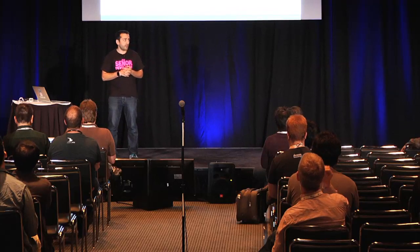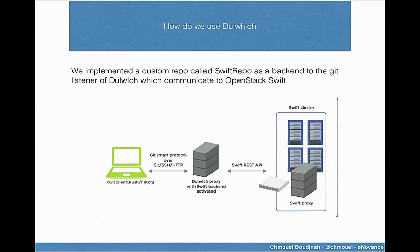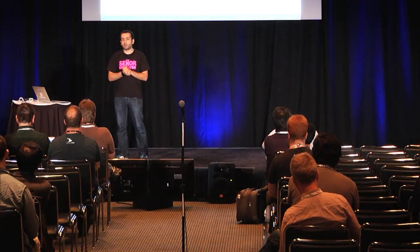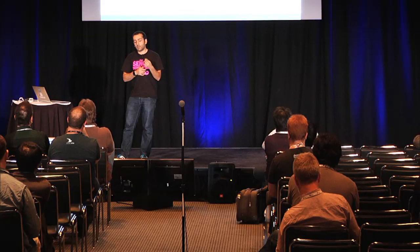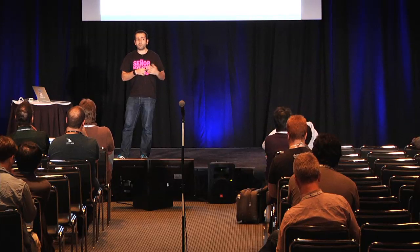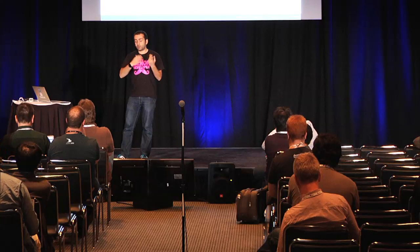In an environment like this, you end up with a Dulwich proxy that sits between the Swift cluster and the Git client. You do your git-push or git-fetch to that URL, and the Dulwich proxy takes care of uploading to the Swift cluster and handling the create, delete, and all the blob operations. It's pretty transparent — we didn't need a custom middleware inside Swift, we didn't need a modified version of the Git binaries. We just need a piece of infrastructure that can sit alongside the Swift boxes and does the translation for you.